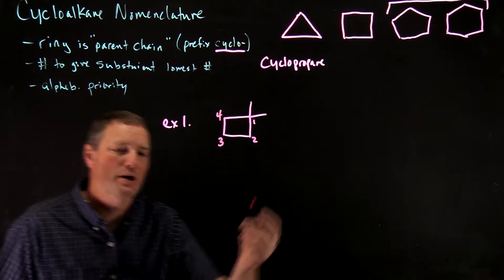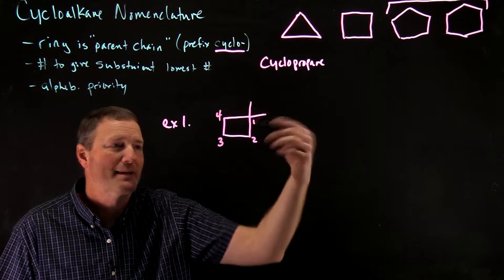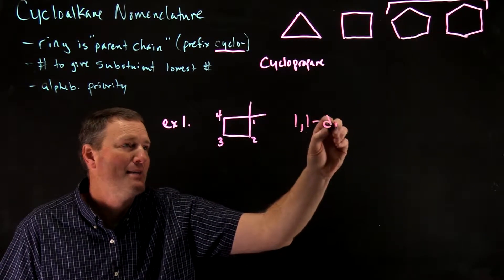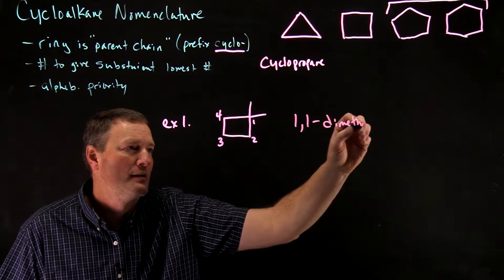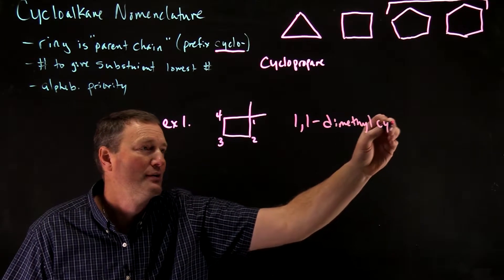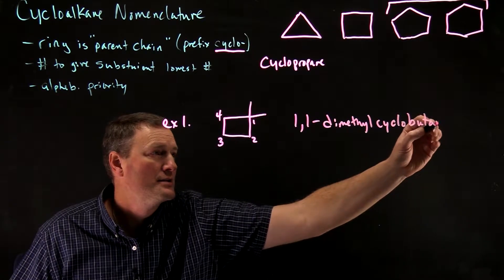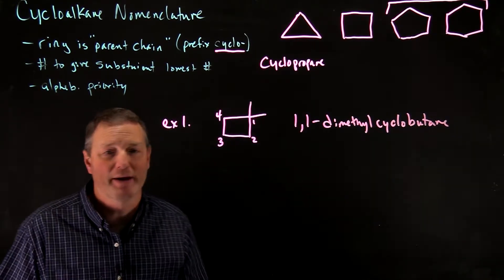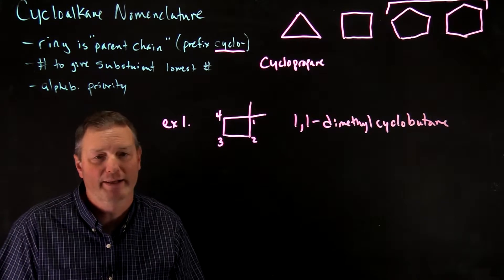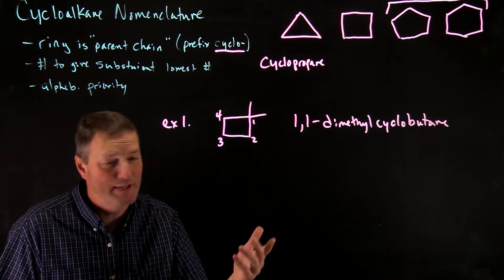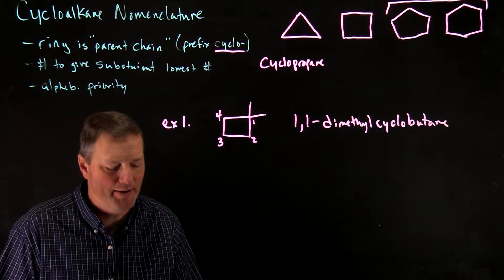And as we saw in previous videos, if I have two methyl substituents, I'm going to give each one a number, so this would be 1,1-dimethylcyclobutane. Just don't forget to put in that cyclo there because it does indicate that it's a ring-like structure. If you just put in 1,1-dimethylbutane, that would definitely not be the right compound name.